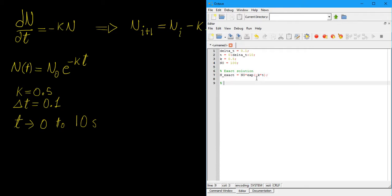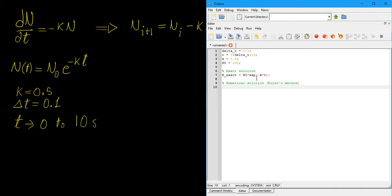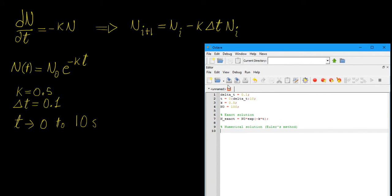And now we want to have our numerical solution, which is going to be calculated using Euler's method. So what we're going to do is we're going to place this finite difference equation we have here inside of a loop. So in Octave and Matlab, you write a loop by saying for, and the subscript we're using is i, so let's say i goes from 1, so we're going to index our arrays based on this, from 1 to, say, the length of t.